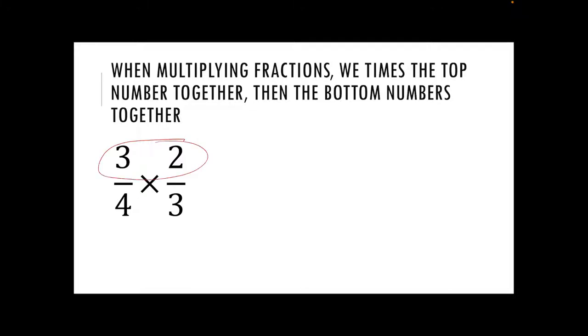So what we do is we take the top two together, so three times by two is six. We take the bottom two together, four times by three is twelve. So we get six over twelve and then I hope you're all thinking we need to simplify this answer. Six and twelve are in our six times table. So when we simplify that down our final answer becomes one half.